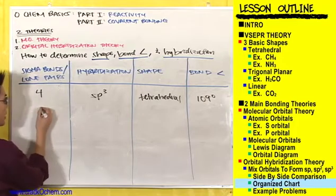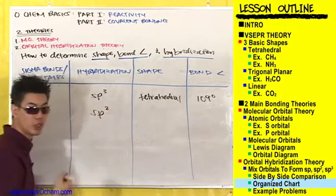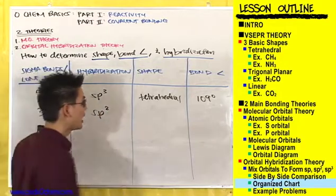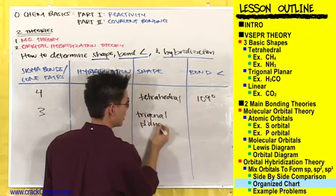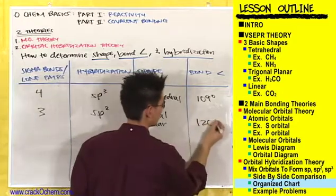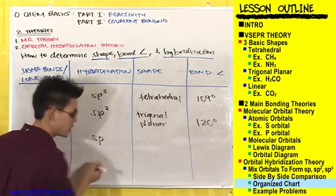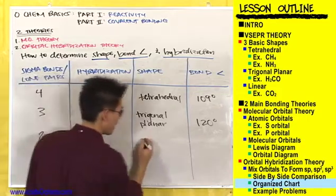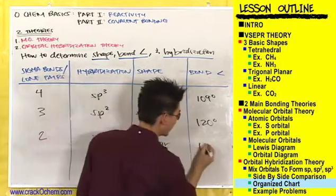If you have a combination of three sigma bonds or lone pairs, this gives you sp2 hybridization and a trigonal planar shape with bond angles of 120 degrees. And if you have a combination of two sigma bonds or lone pairs, this gives you sp hybridization, a linear shape, and bond angles of 180 degrees.